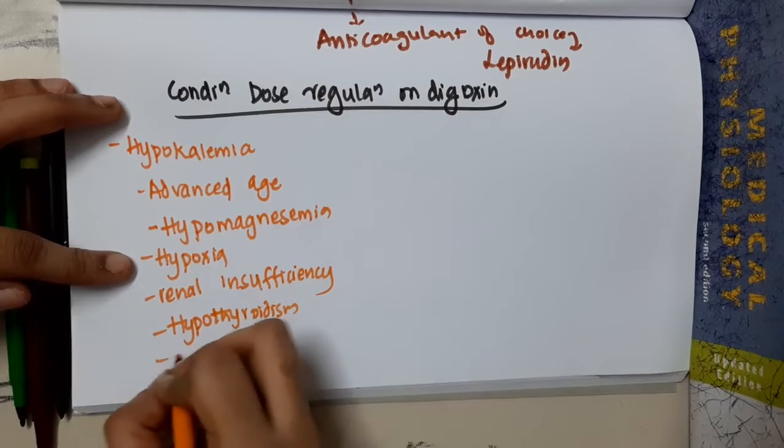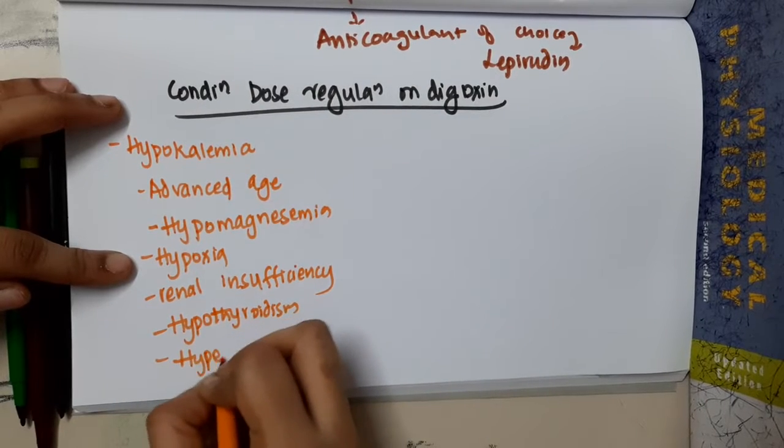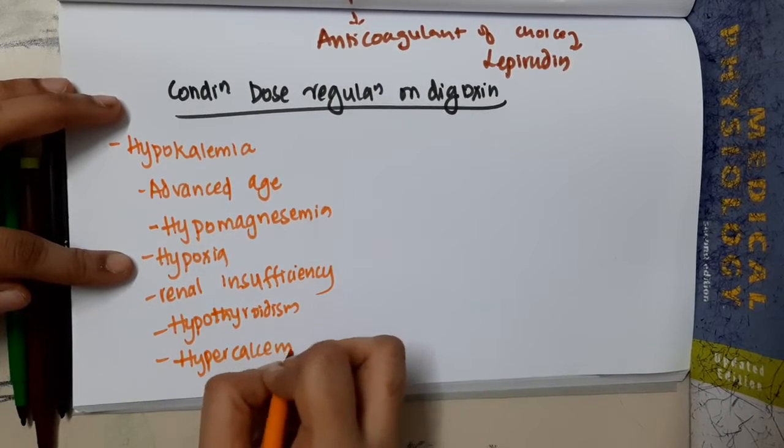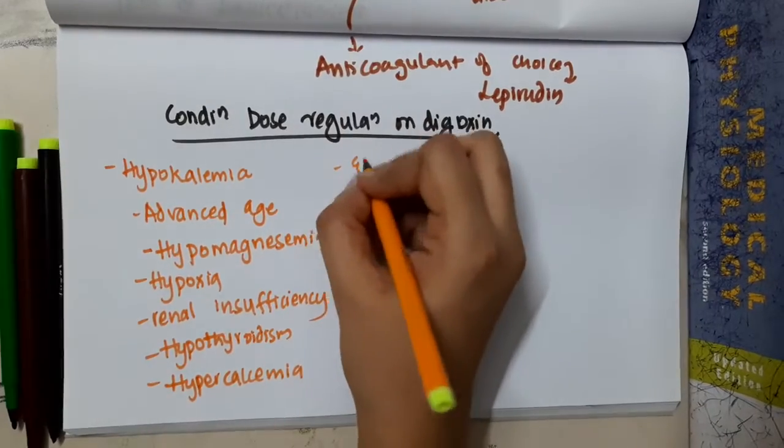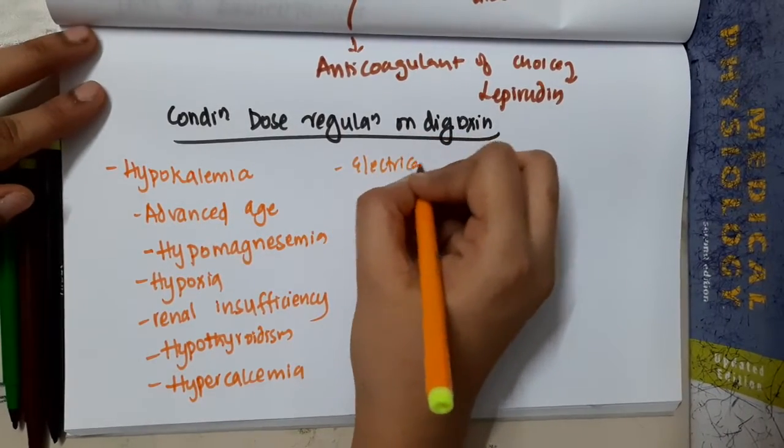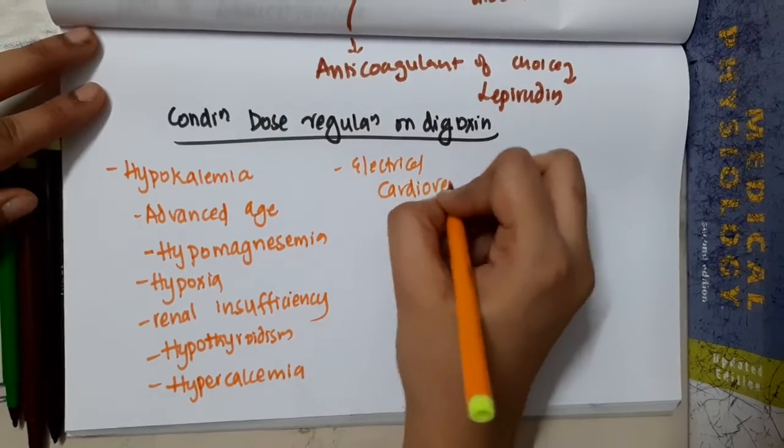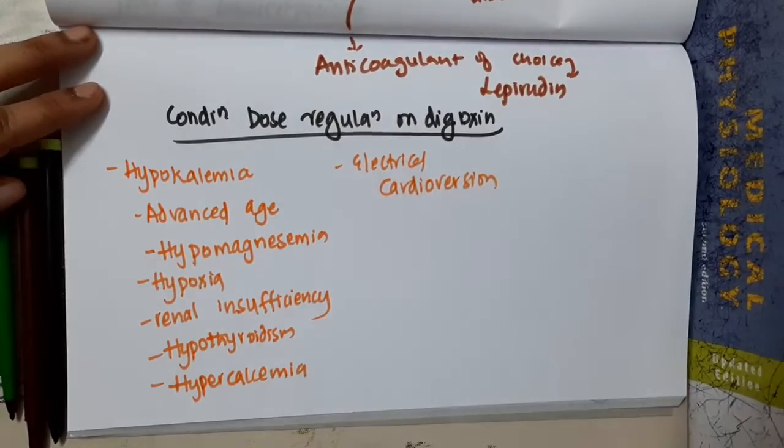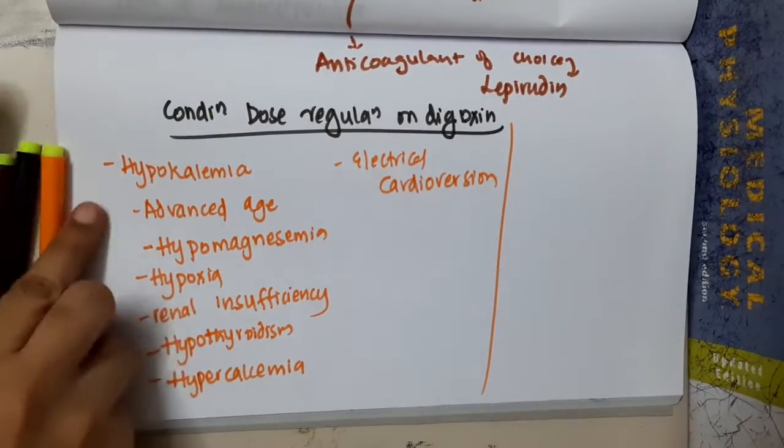Then we have hypercalcemia and electrical cardioversion. So these are the different conditions where the digoxin dose should be varied. Then what about hepatic disease?